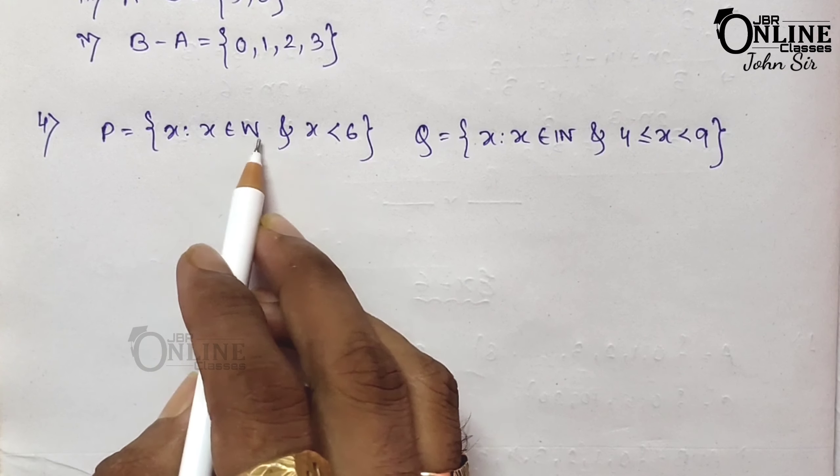The last question: is P union Q a proper superset of P intersection Q? Yes, definitely. Because P intersection Q has only 4 and 5, and these 4 and 5 belong to P union Q. All elements of P intersection Q belong to P union Q — that's why it's a proper superset.